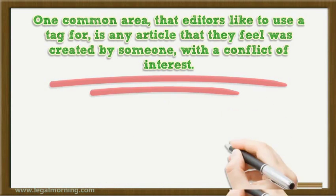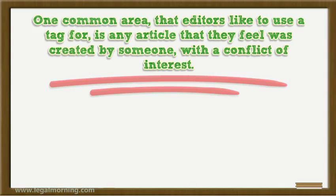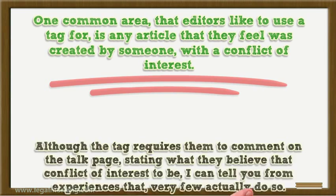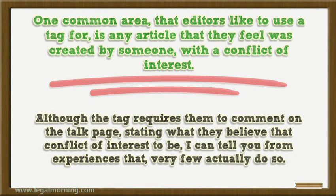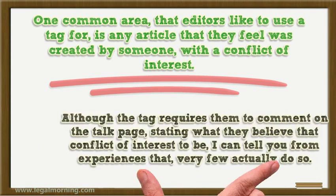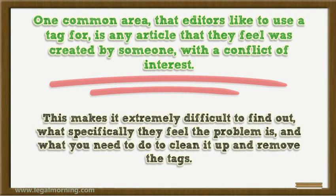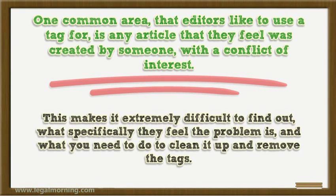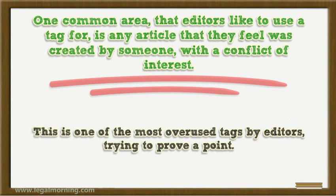One common area that editors like to use a tag for is any article that they feel was created by someone with a conflict of interest. Although the tag requires them to comment on the talk page stating what they believe the conflict of interest to be, very few actually do so. This makes it extremely difficult to find out what specifically they feel the problem is and what you need to do to clean it up and remove the tags. This is one of the most overused tags by editors trying to prove a point.